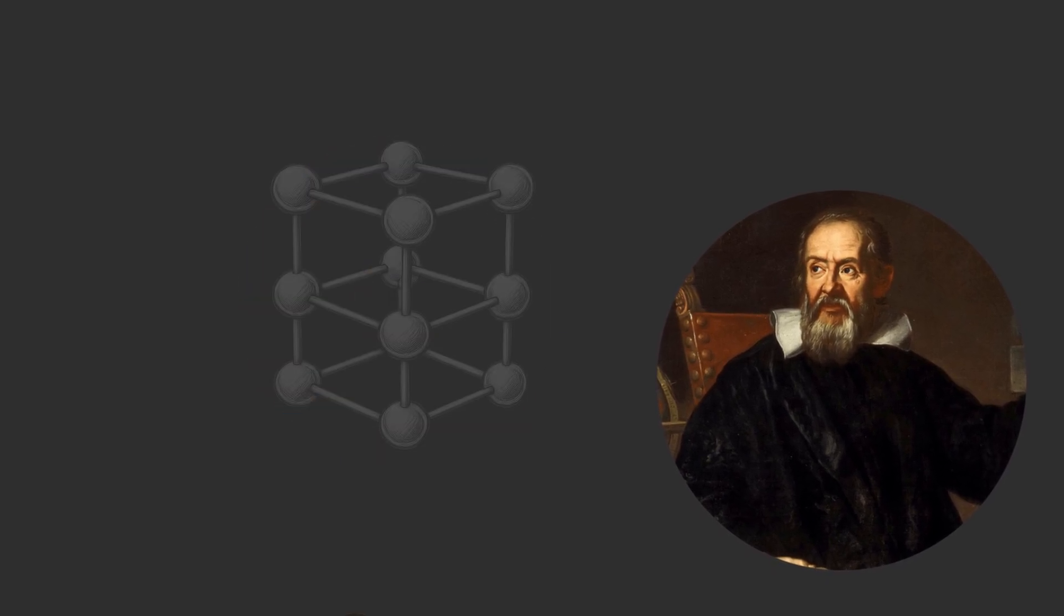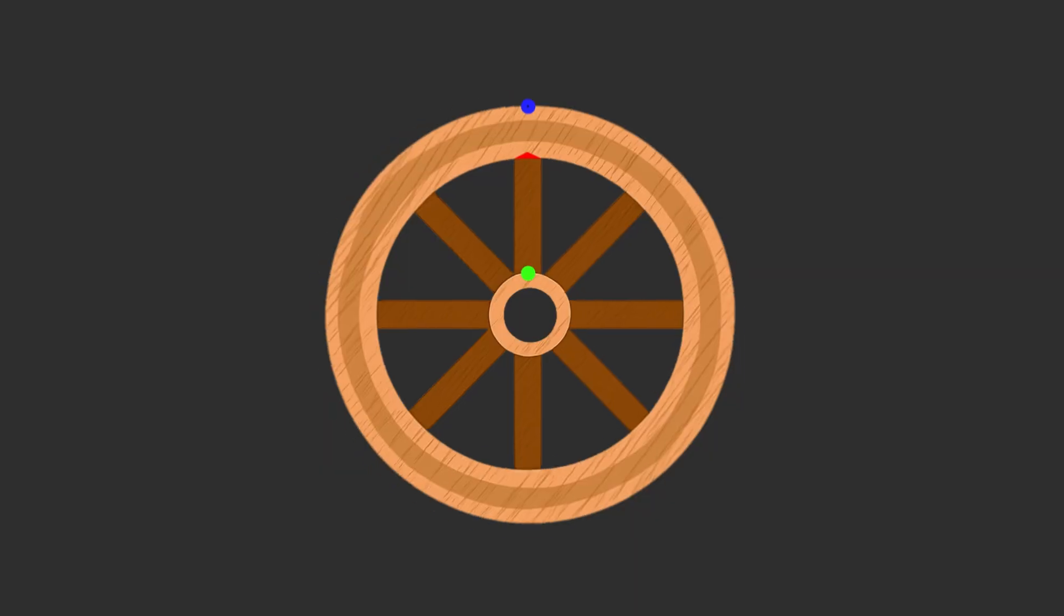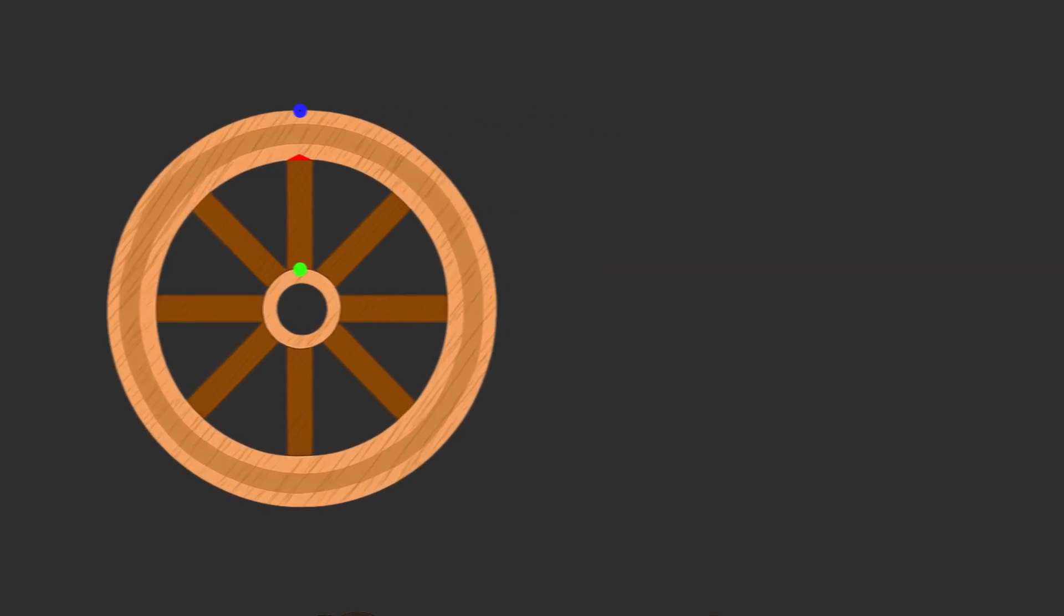This actually led him to believe that matter is composed of atoms. As we know today, matter does in fact consist of atoms. But he was not right about Aristotle's wheel. The solution to the paradox is actually quite simple.